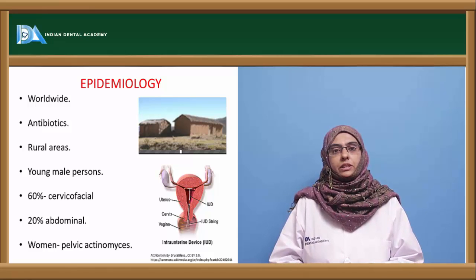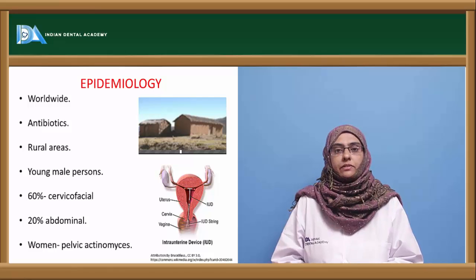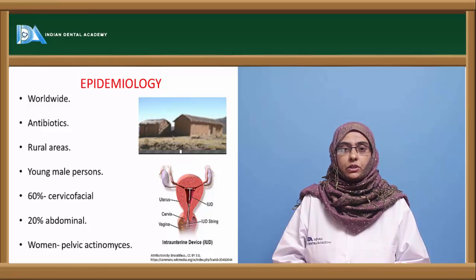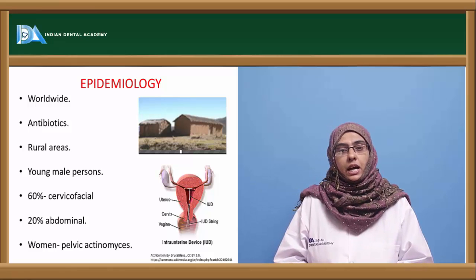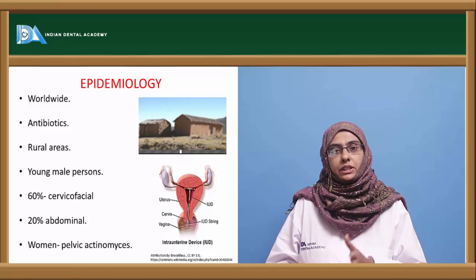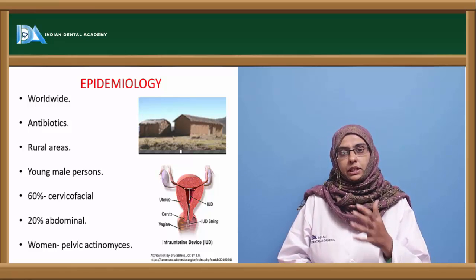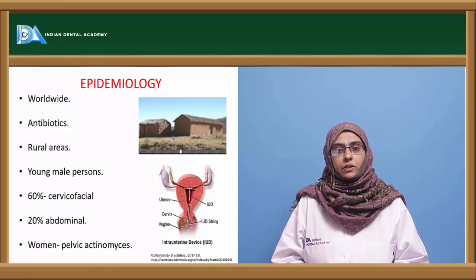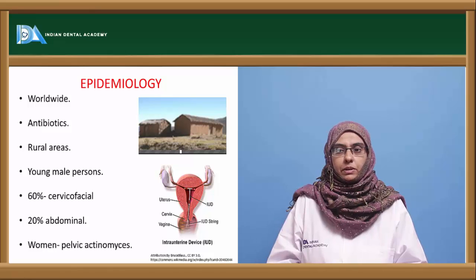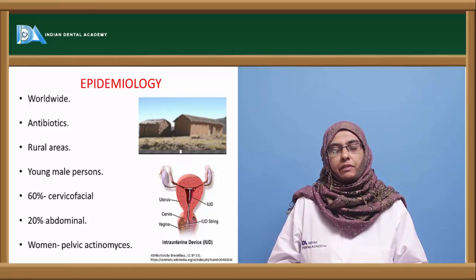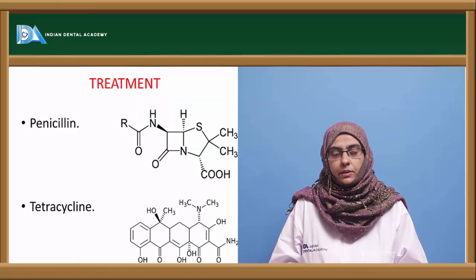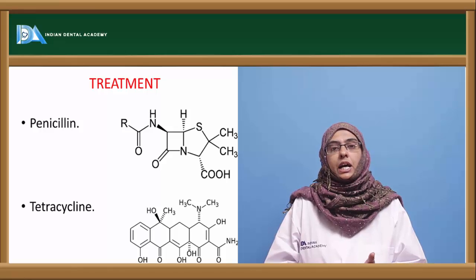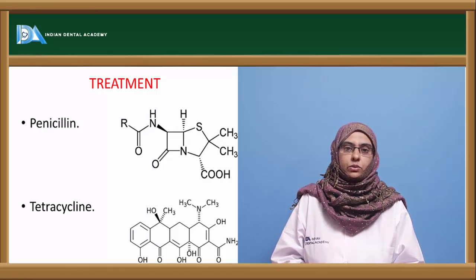Actinomycosis was a worldwide disease but cases have declined with antibiotic treatment; it now affects mainly rural areas and agricultural workers. Young males between 10–30 years are mostly affected, associated with poor oral hygiene. 60% of cases are cervico-facial, 20% abdominal, and in women pelvic actinomycosis occurs due to intrauterine devices. Treatment involves penicillin and tetracycline for a prolonged period, with surgery if needed.